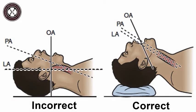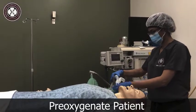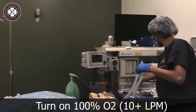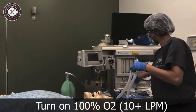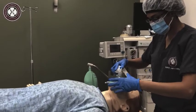The sniffing position aligns the oral, pharyngeal, and laryngeal axes which optimizes glottic visualization. However, if a patient cannot tolerate cervical manipulation, intubation success may be increased with the use of the video laryngoscope. Next, pre-oxygenate the patient by turning the FiO2 to 100% at 10 or more liters per minute for several minutes until the ETO2 is 90%.